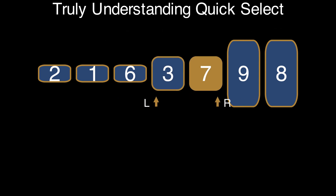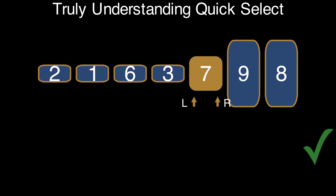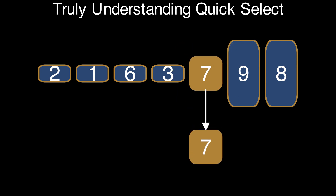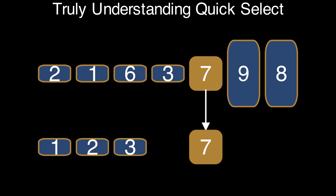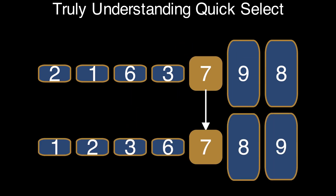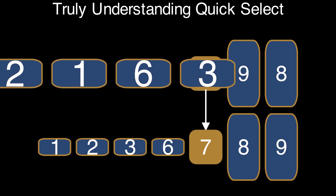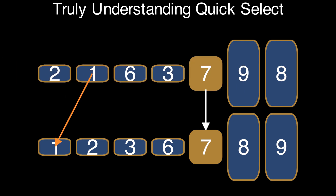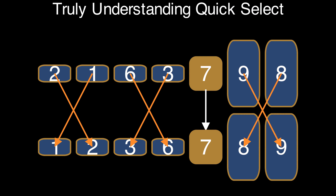We keep applying one of the three operations until the segment L-R reduces to a single element, which is necessarily the pivot, and partitioning is done. After partitioning, the pivot is in its final position as it would appear in the sorted array. The elements to the left of the pivot remain to the left in the sorted array, and the elements to the right remain to the right.